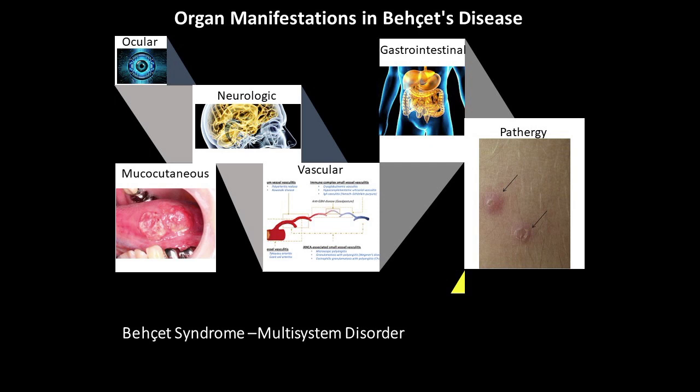As I mentioned, it's a multi-system disorder with recurrent manifestations. The disease can involve all kinds of systems and organs — mucocutaneous findings, gastrointestinal system involvement, musculoskeletal involvement, cutaneous involvement, neurological/CNS involvement, ocular involvement, and large vessel vasculitis.